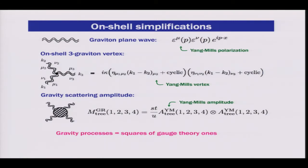No surprise there was great simplification for freely propagating particles. But if you start looking at the interacting theory, you see the same kind of simplification. Looking at the three-point amplitude on shell — which you can define using complex momenta — you see that it factorizes into two pieces. Each piece has the familiar structure of a three-point vertex in Yang-Mills theory. It doesn't have the color structure, just the kinematical structure, and it has two copies of it.